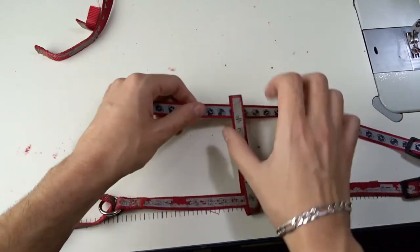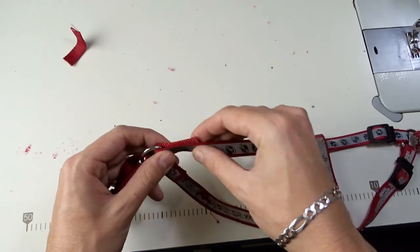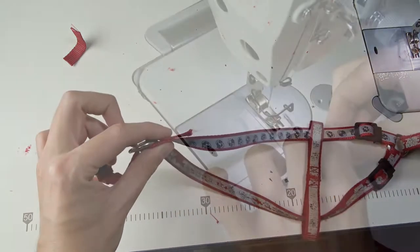Pass the webbing through the middle strap and through the metal ring at the end. Then fold the end and sew it the same way as before.